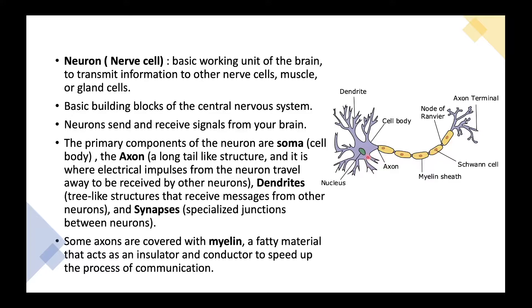Next, we will talk about the axon. Basically, the axon is a long tail-like structure which is responsible for the travelling of electrical impulses, which are then received by other neurons.